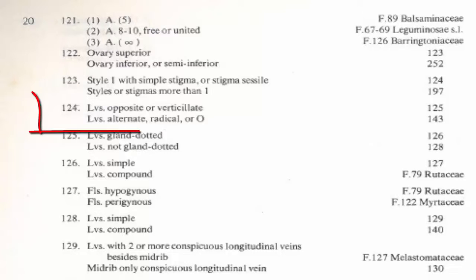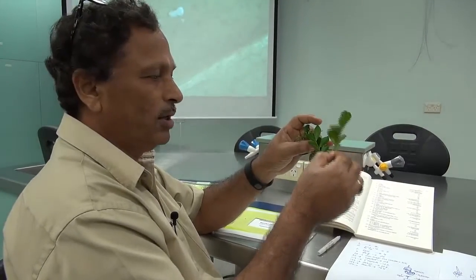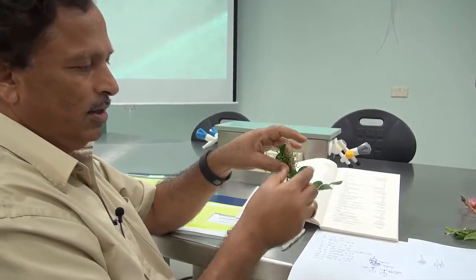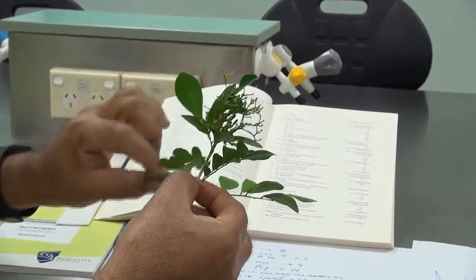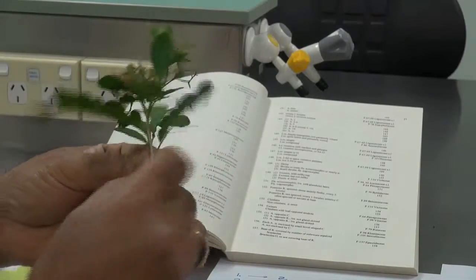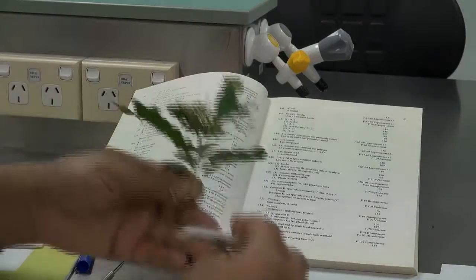Step 124 asks: are the leaves opposite or alternate? You need to go back to your sample. In this case, the whole thing is a leaf, and you look at the position of each one. There is one, then above that there is another one, and above that another one. So the leaves are alternate — one, then next, next, next — so this leaf is alternate.